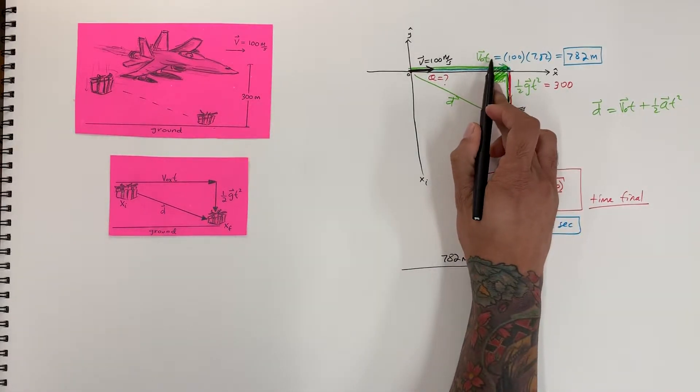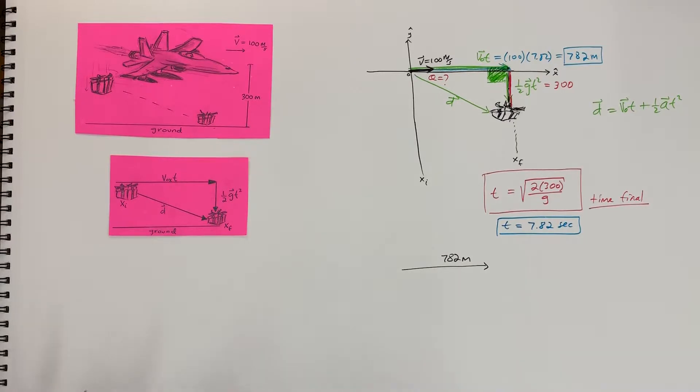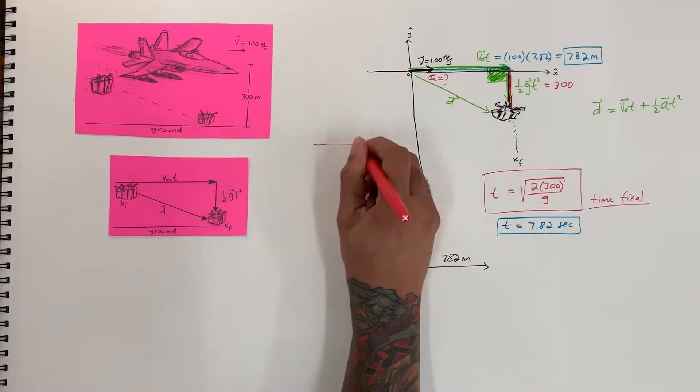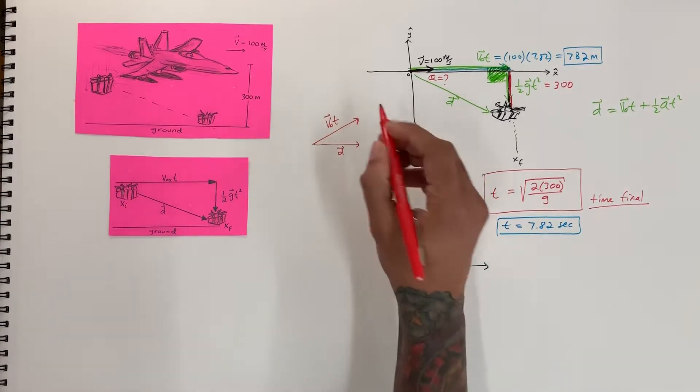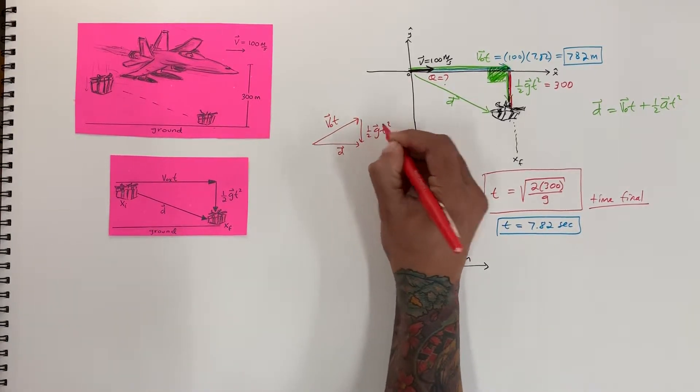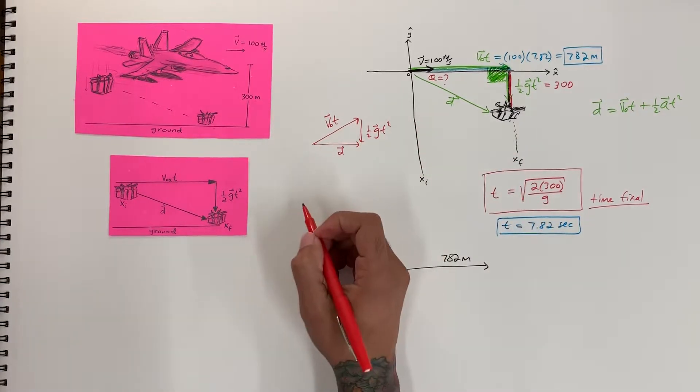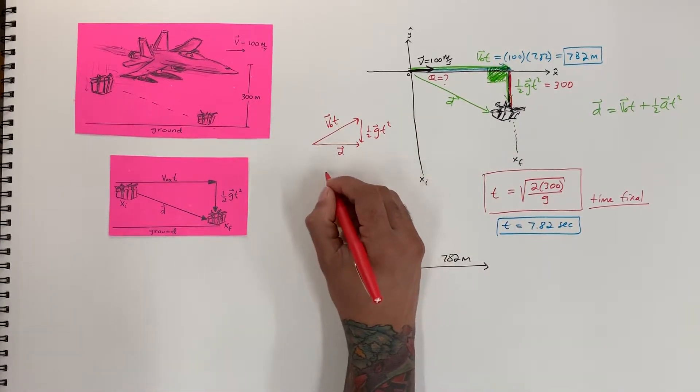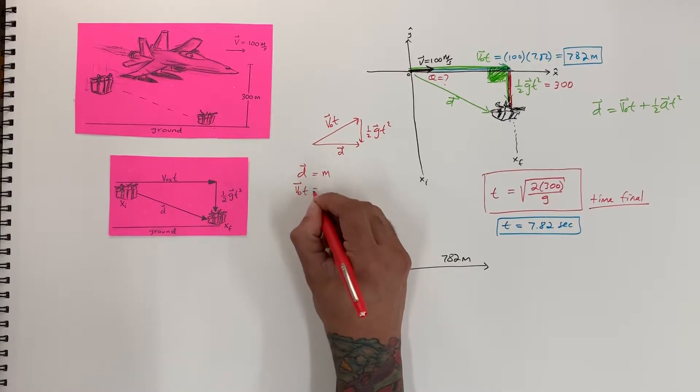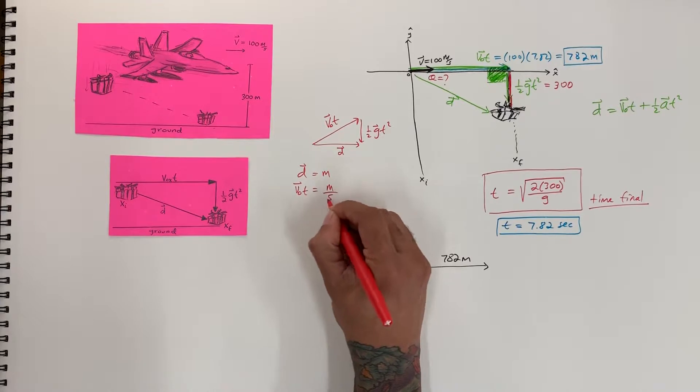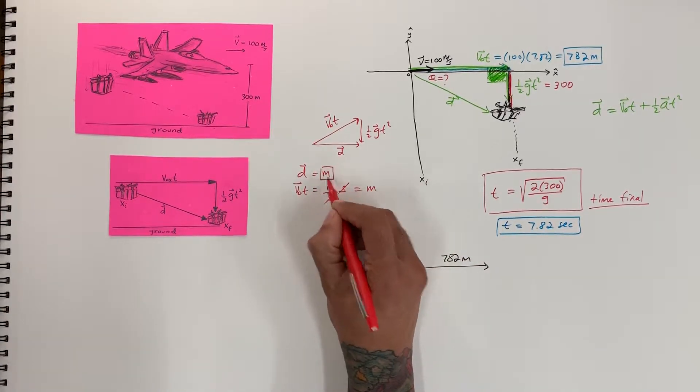Alright? Because velocity times time is units of meters. In fact, this entire triangle, okay, so the triangle that we've been drawing, which is displacement, we got velocity times time and we have one-half g t squared. Okay? All of these vectors are measured in meters. Okay? So let me show you. This displacement is in meters. Okay? And let's look at v-naught times time. So we got velocity is meters per second and time is seconds. So the s is cancelled out and we get m. So the same thing as the displacement vector.